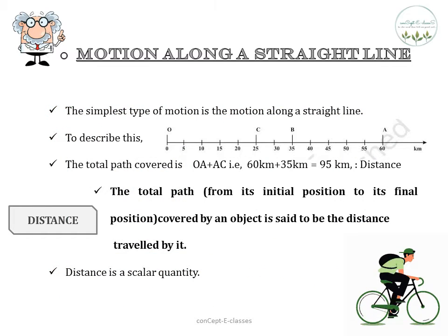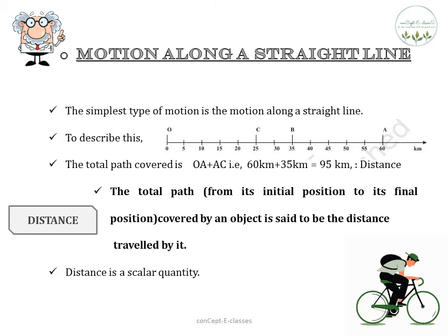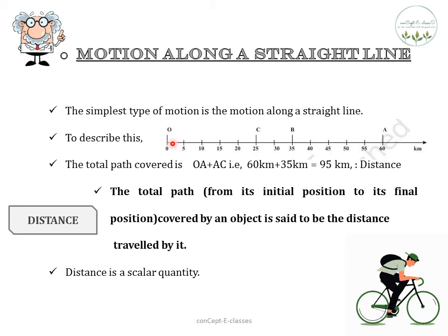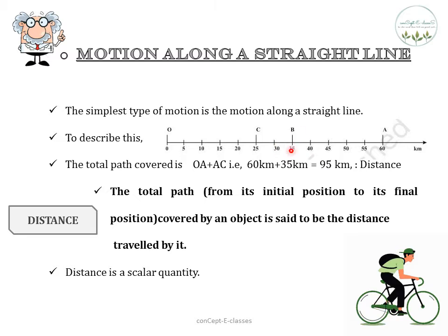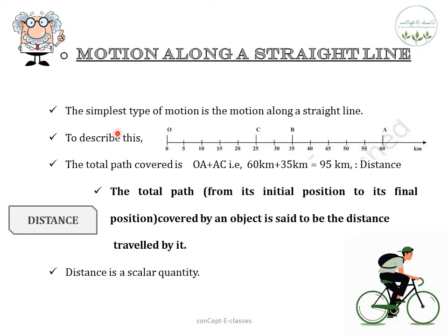Now let us see motion along a straight line. The simplest type of motion is motion along a straight line. Consider the motion of an object along a straight path. It starts from O — let this be the reference point or origin. Let A, B, C represent the positions of the object at different instances. If the object moves from point O to point A, the total path covered is 60 kilometers — this is the distance.